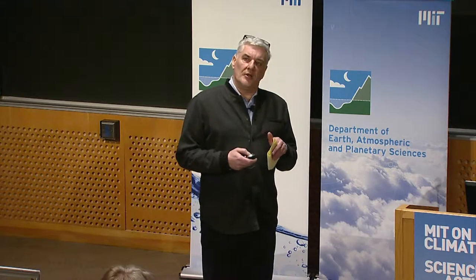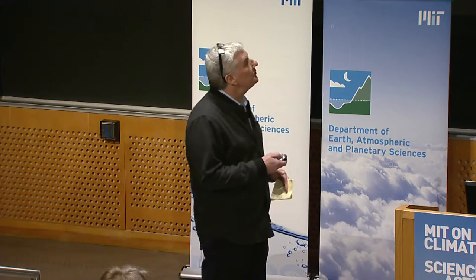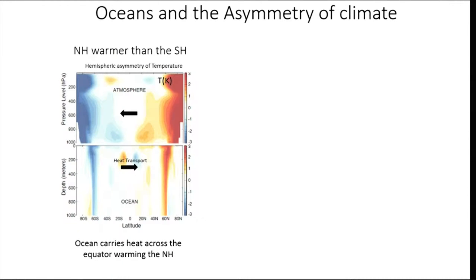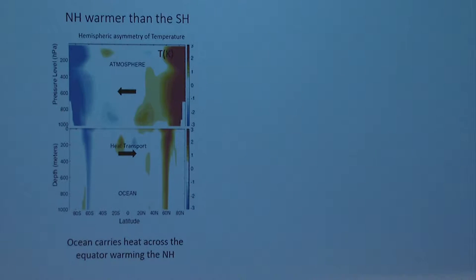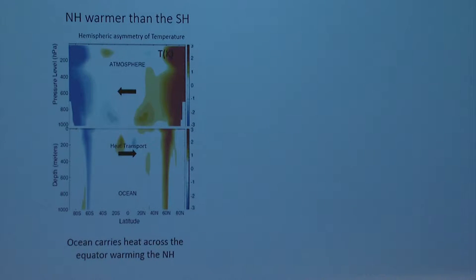I'm going to spend some time talking about the way the ocean sets up regional, large-scale patterns of climate — starting with the oceans and asymmetry of climate, noting that the northern hemisphere is warmer than the southern hemisphere in the current climate. This shows the asymmetric temperature distribution — the component of temperature which is asymmetric about the equator based on observations. This is the equator, going up into the atmosphere, about 10–15 miles up, with the atmosphere above and the ocean below.